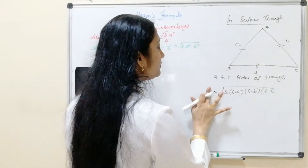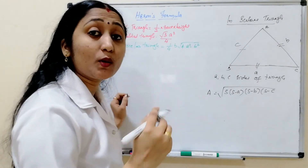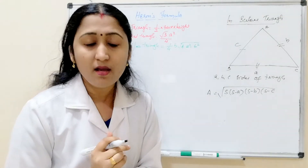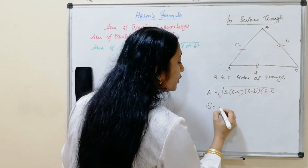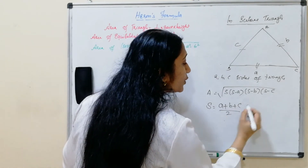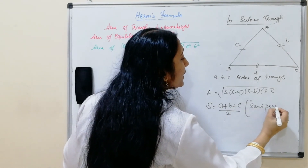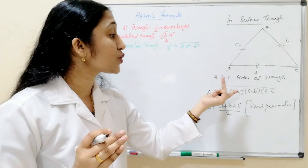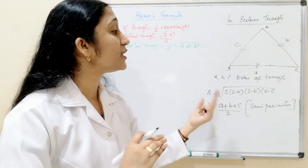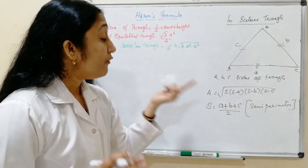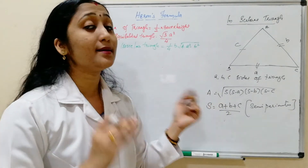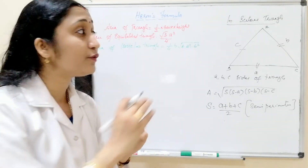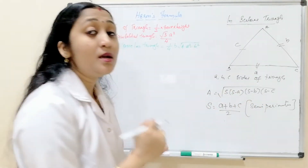What is s? S is the semi-perimeter. The perimeter means the sum of the three sides of a triangle. So the semi-perimeter is s equals (a plus b plus c) divided by 2. This is called the semi-perimeter. In Heron's formula, Area equals the square root of s times (s minus a) times (s minus b) times (s minus c), where s equals (a plus b plus c) divided by 2.